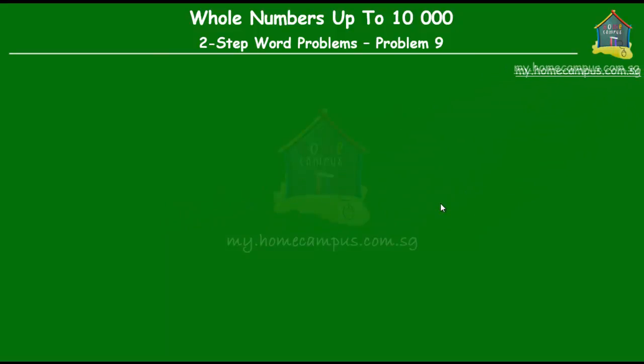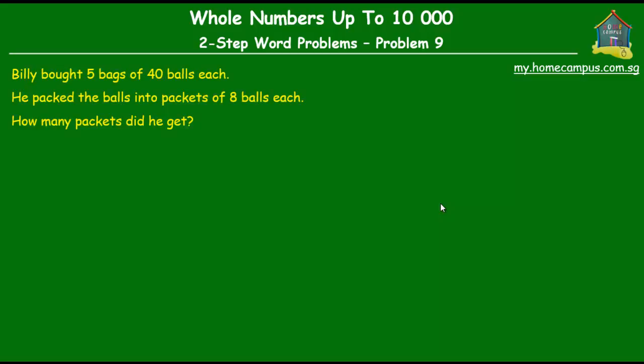Hello and welcome to my.homecampus.com.sg. Let's solve this two-step word problem on whole numbers. The question is, Billy bought five bags of 40 balls each. He packed the balls equally into packets of eight balls each. How many packets did he get?